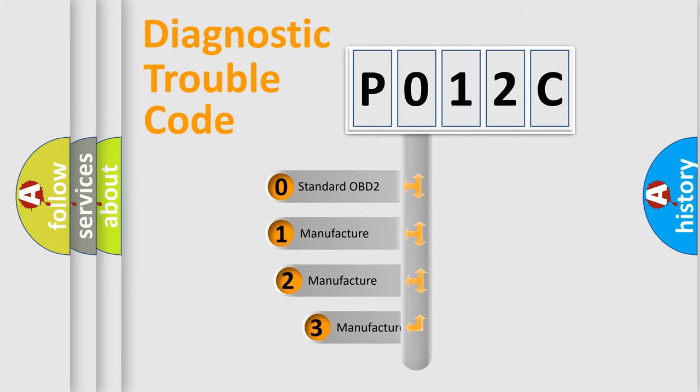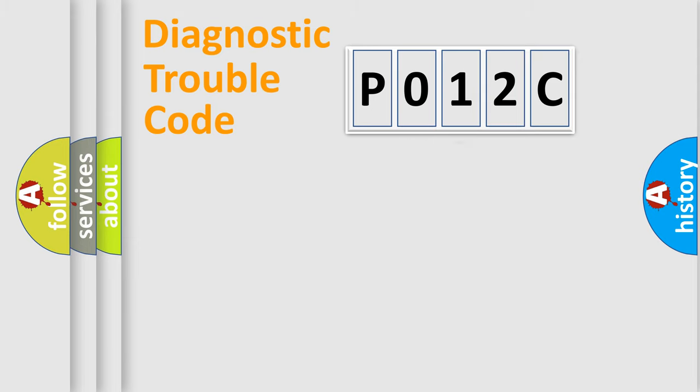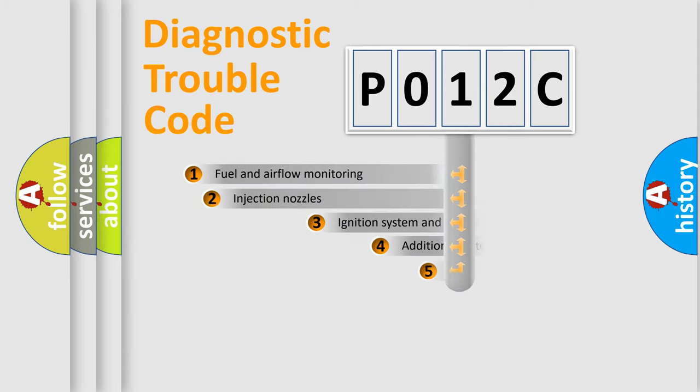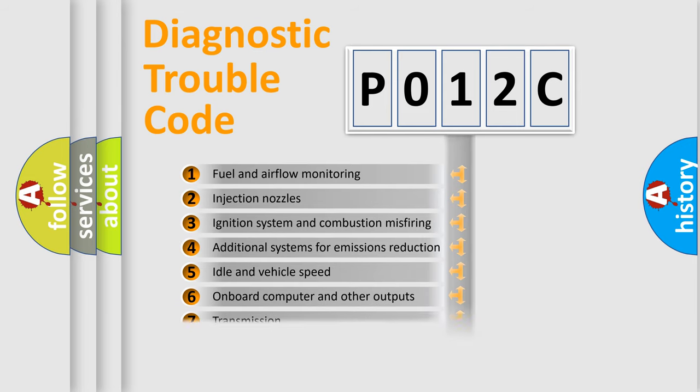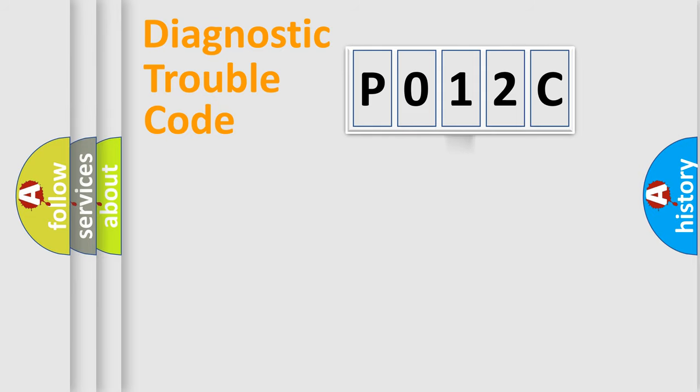If the second character is expressed as 0, it is a standardized error. In the case of numbers 1, 2, or 3, it is a manufacturer-specific expression of the car-specific error. The third character specifies a subset of errors. The distribution shown is valid only for the standardized DTC code.